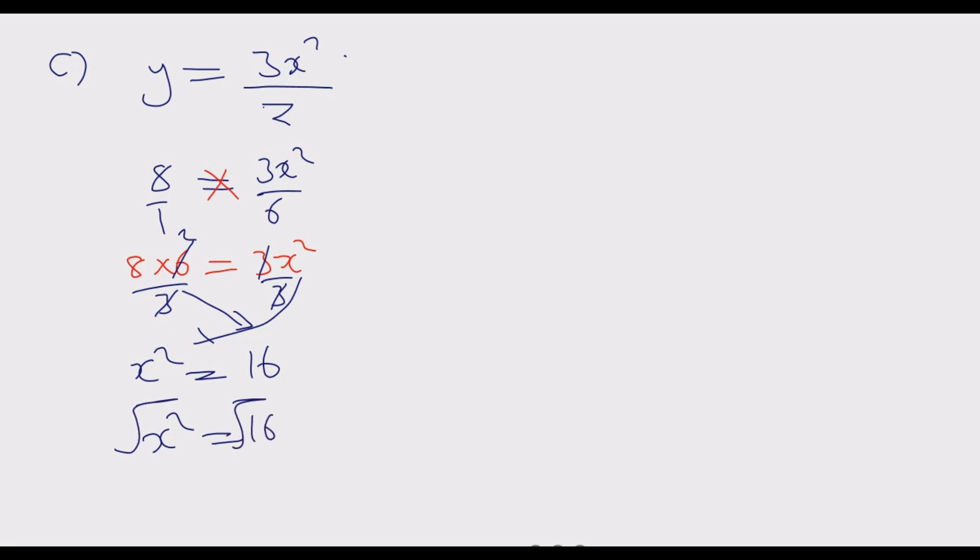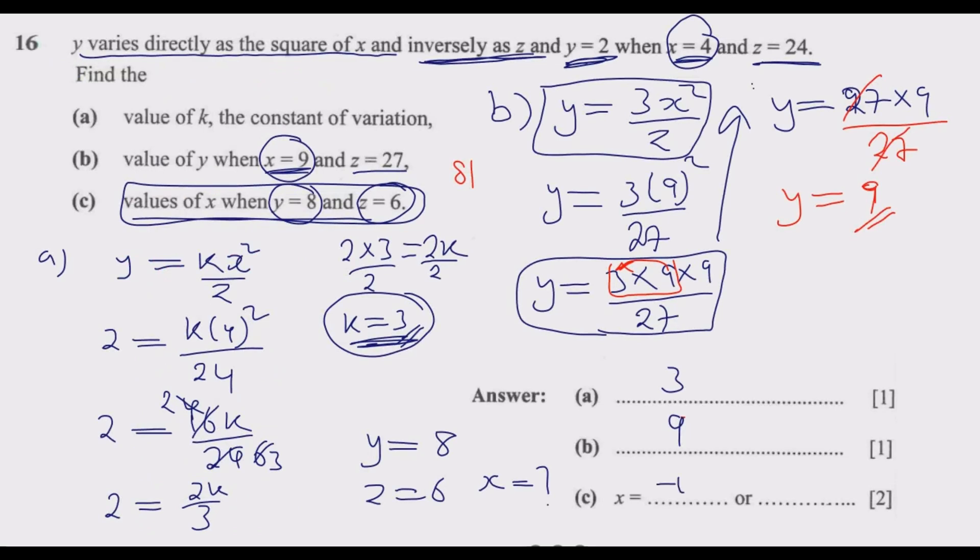So this tells me X equals plus or minus 4. We are saying which number can multiply itself twice to give us 16. That number is 4. So the values of X can either be positive 4 or negative 4. We know that we have negative 4 or positive 4 as our answers. So basically this is how you answer question 16.